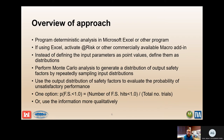Then perform a Monte Carlo analysis to generate a distribution of output safety factors by repeatedly sampling input distributions — 100, 1,000, or 10,000 times, whatever you set. Use that output distribution to evaluate the probability of unsatisfactory performance in a risk analysis. One option is to determine the probability that the factor of safety falls below 1.0, calculated as the number of iterations where FS is less than one divided by the total number of iterations. Or you can use the information more qualitatively.